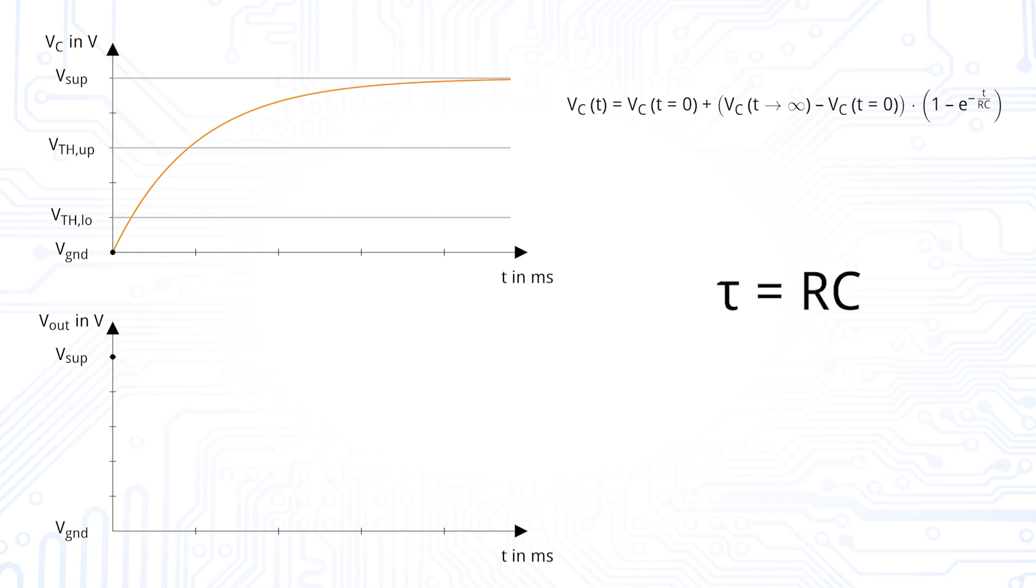The starting voltage VC at T equal to zero is zero volt and after an infinite amount of time, the capacitance VC at T towards infinity would be charged to the supply voltage. However, the capacitor is not fully charged as the upper threshold voltage of the Schmitt trigger is reached and the inverting Schmitt trigger's output goes from high to low.